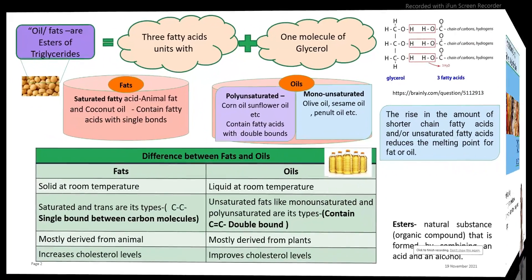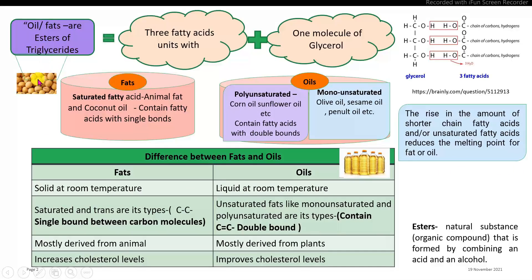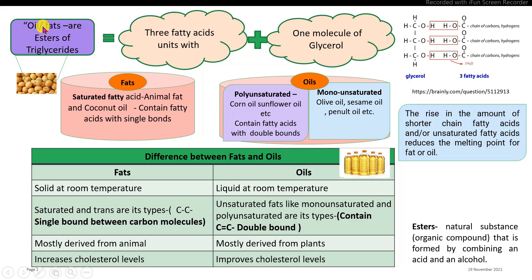First, what is meant by oils and fats? The oil seeds contain oils. These oils are the esters of the triglycerides. Triglycerides contain three fatty acids connected with one molecule of glycerol. One molecule of glycerol connected with three fatty acids — the first fatty acid, the second fatty acid, and the third fatty acid — is called a triglyceride, and it is called oil or fat.